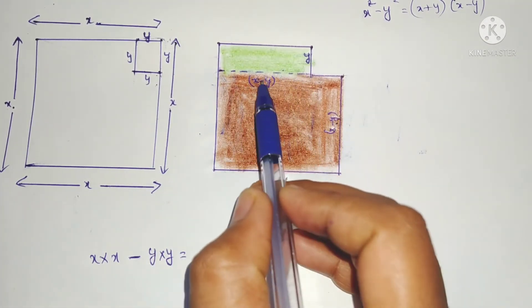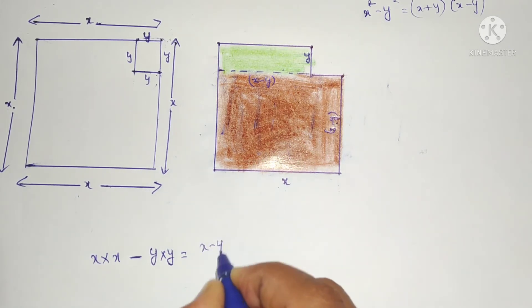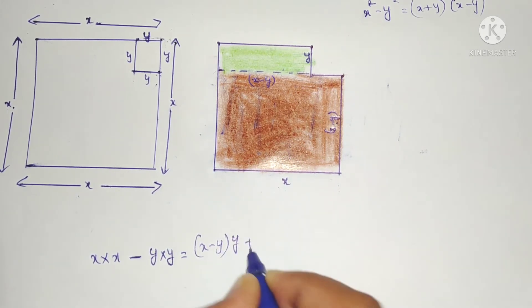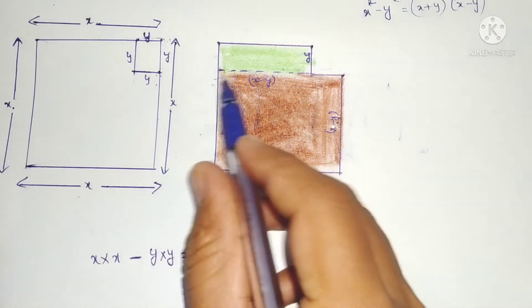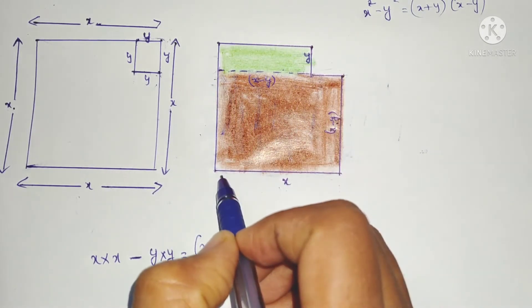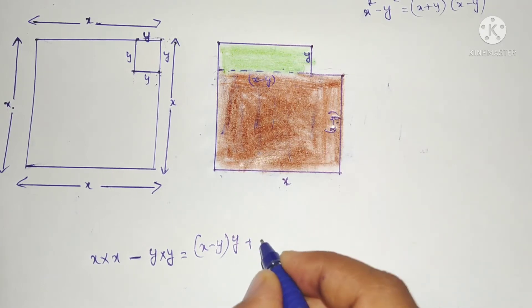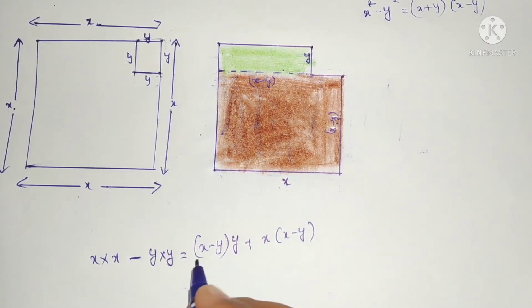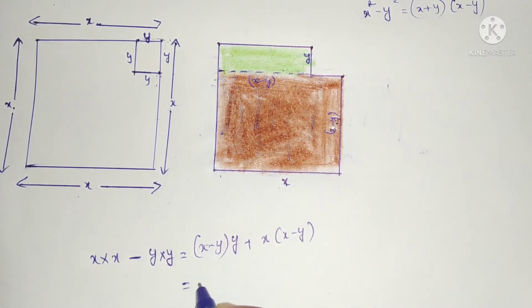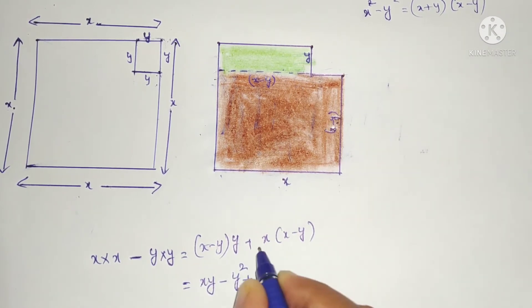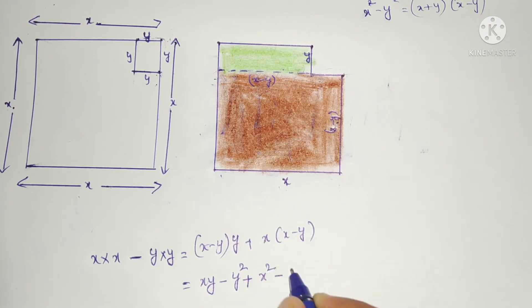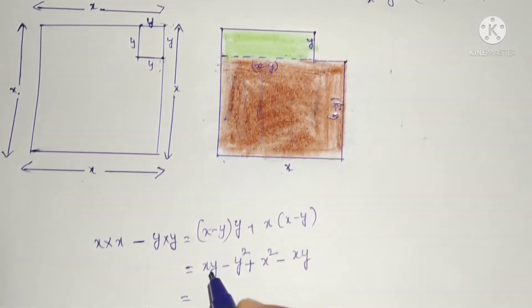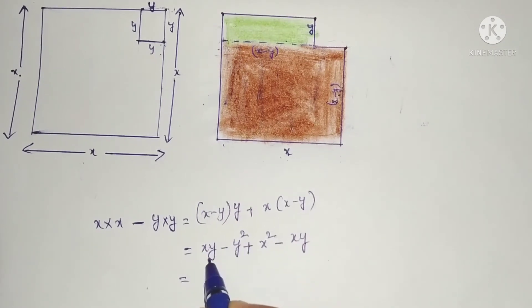The remaining area is the area of this rectangle, which is (x minus y) into y, plus the area of this rectangle, where the length is x units: x into (x minus y). Expanding: xy minus y squared plus x squared minus xy.